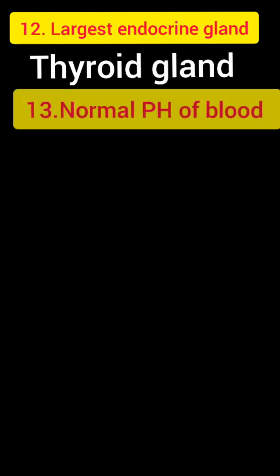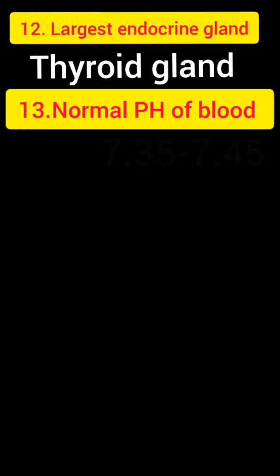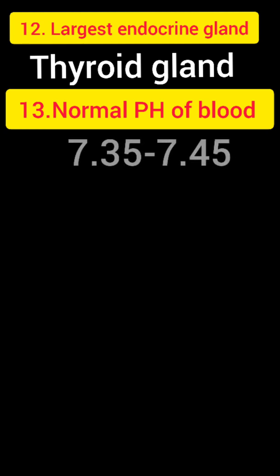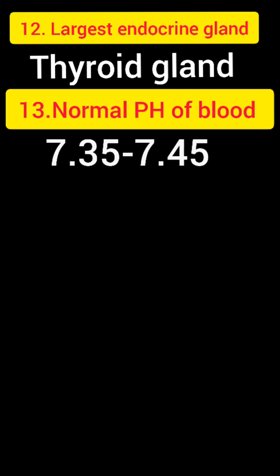Question number 13: the pH of blood in the body. The normal range is 7.35 to 7.45 — that is the normal pH value.